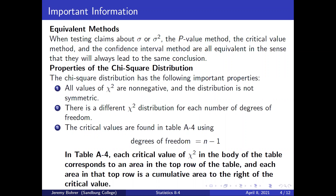When testing claims about sigma or sigma squared, the p-value method, the critical value method, and the confidence interval method are all equivalent in the sense that they will always lead to the same conclusion.